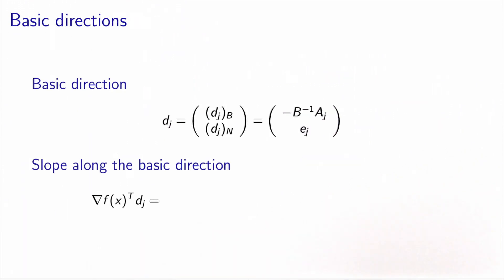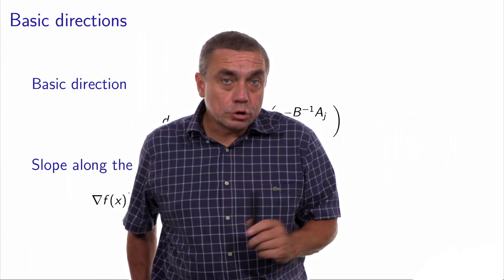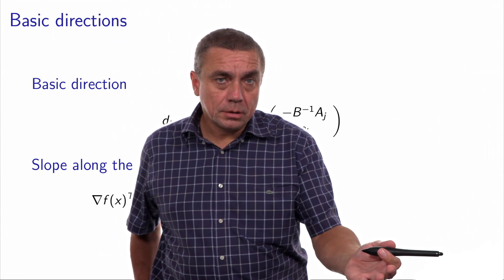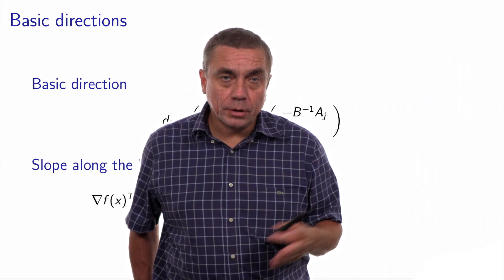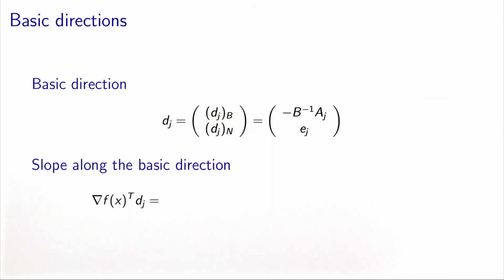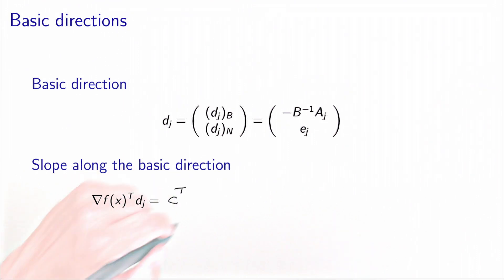Now let's consider a basic direction, which is typically a direction we want to follow in order to visit the vertices of the polyhedron, and calculate the slope of the objective function along it. The slope of a function along a direction is called the directional derivative, which is the inner product of the gradient and the direction. Here, the gradient of the function is simply vector c, so we want to calculate cᵀdⱼ.